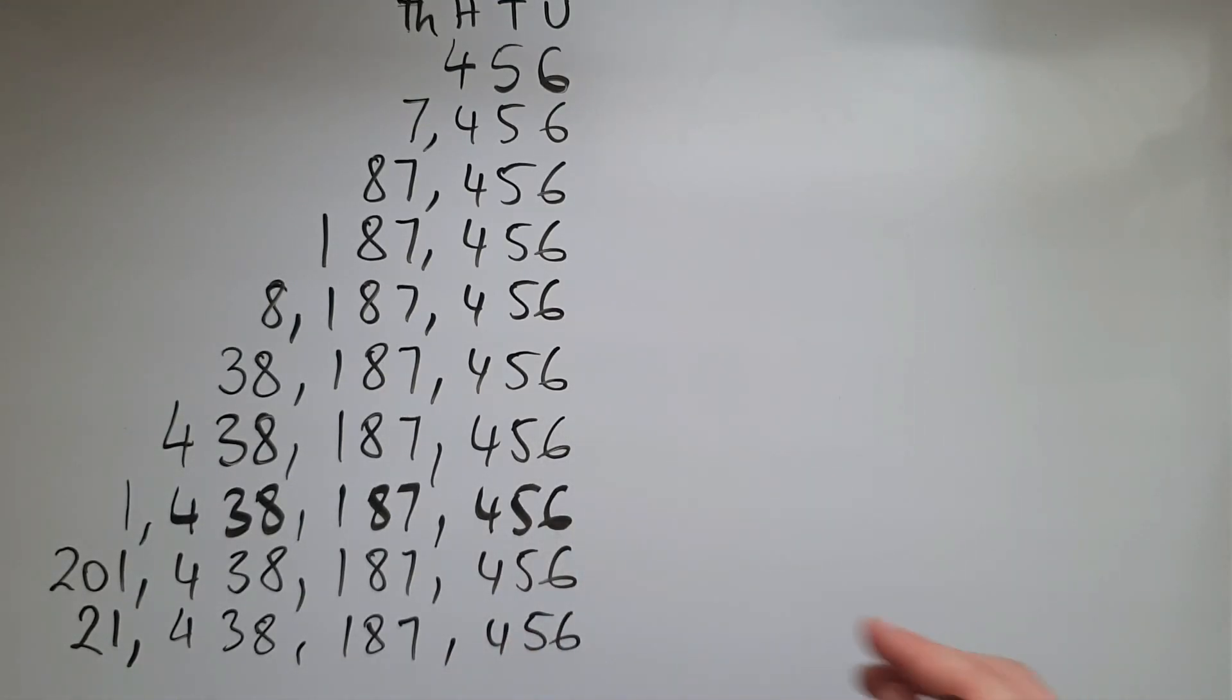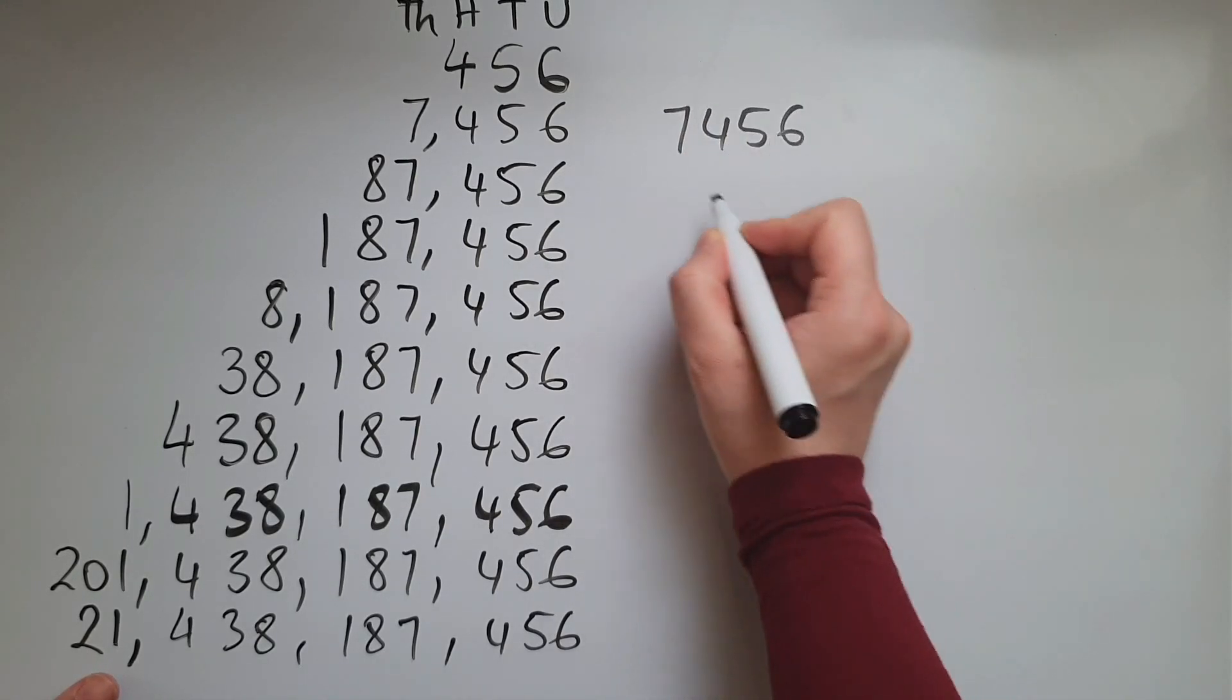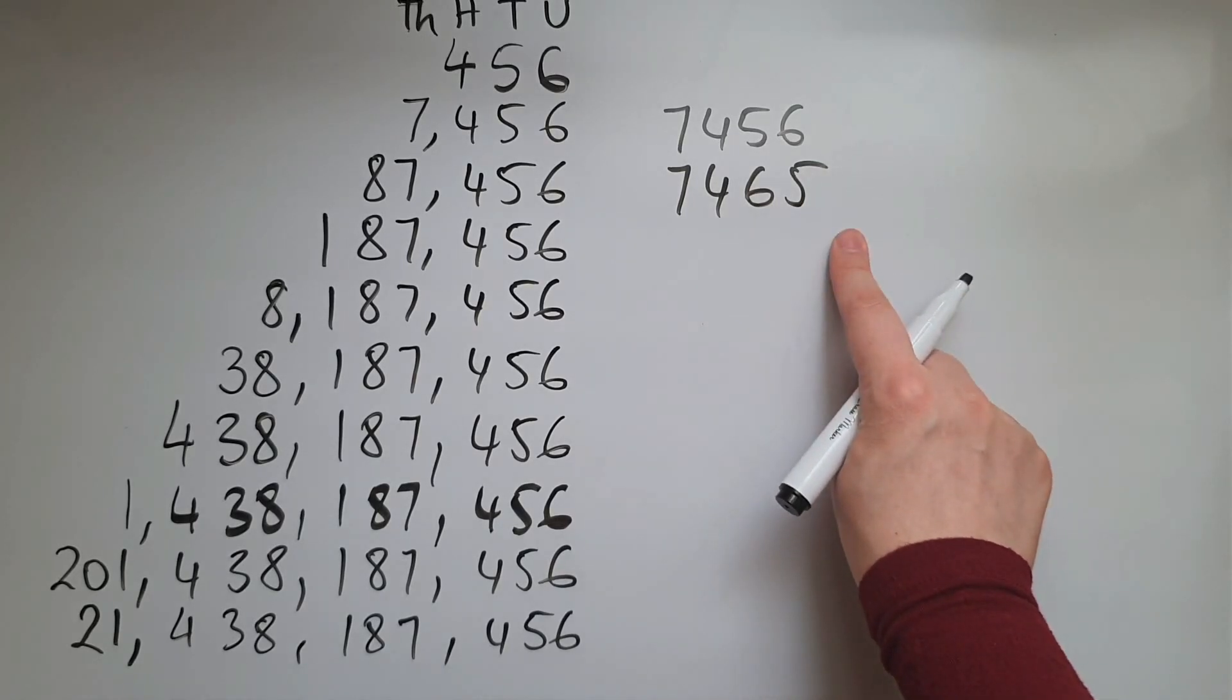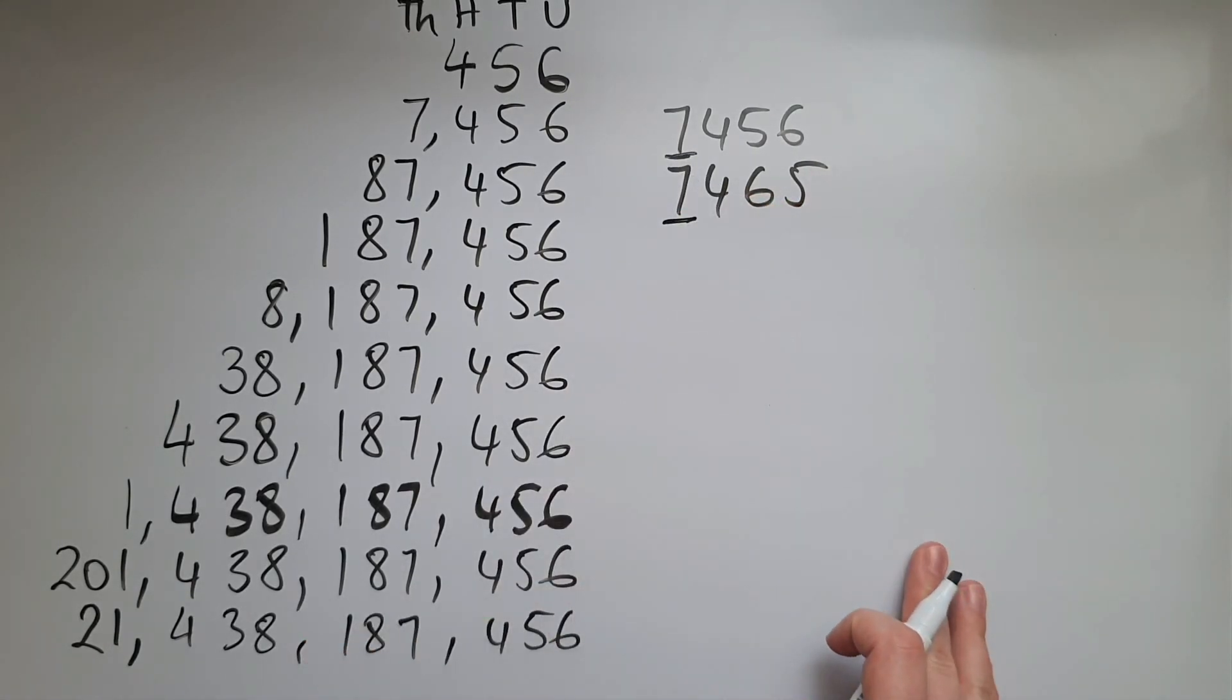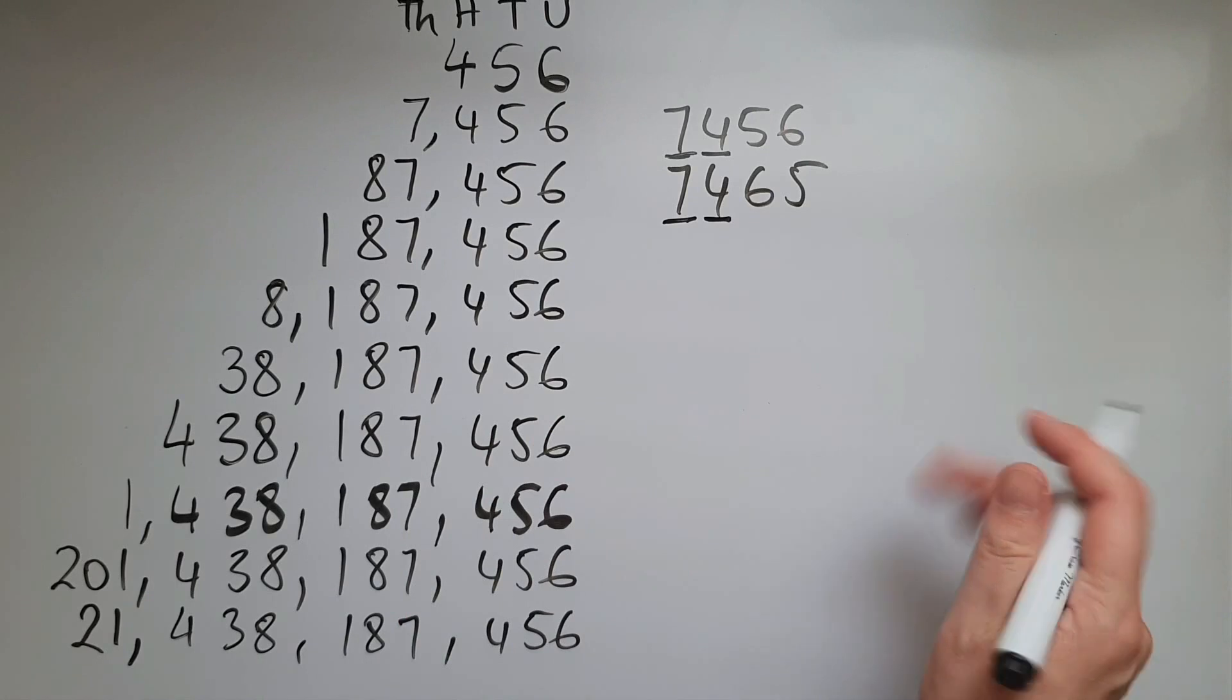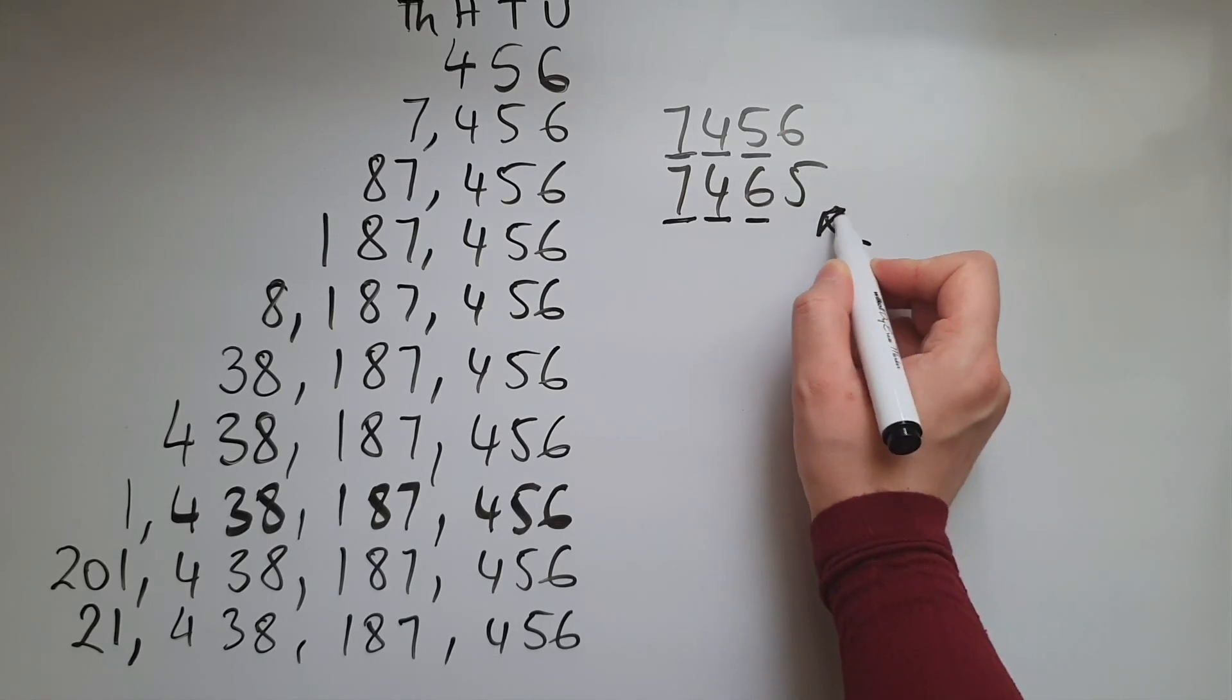So you've noticed that the more digits a number has, the bigger its value. What if you have numbers with the same number of digits like this one here? So this is 7,456 and this is 7,465. Looking at the first digit, that is 7. So we can't differentiate which one is bigger. Then we look at the next digit after it. That's 4 again, so we can't differentiate. Looking at the next digit now, we've got a 6 and a 5. So this one must be bigger.